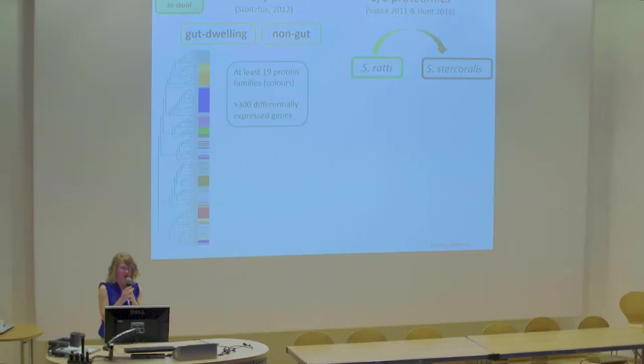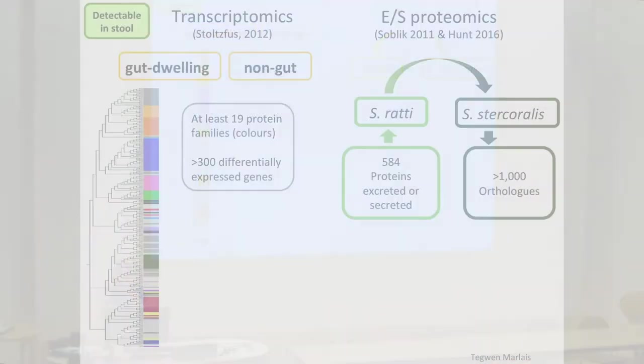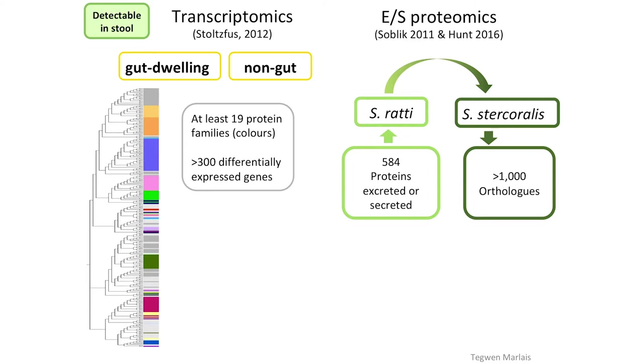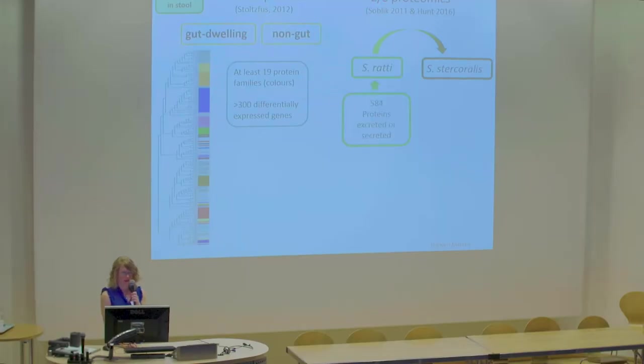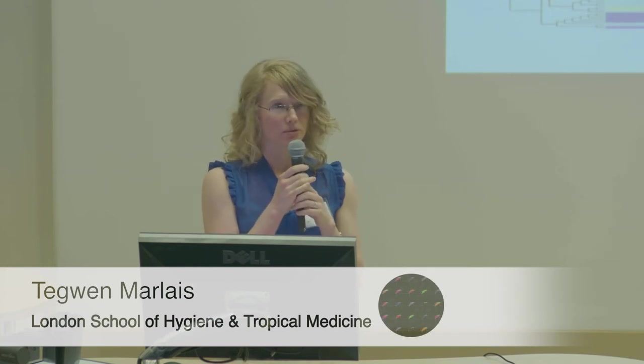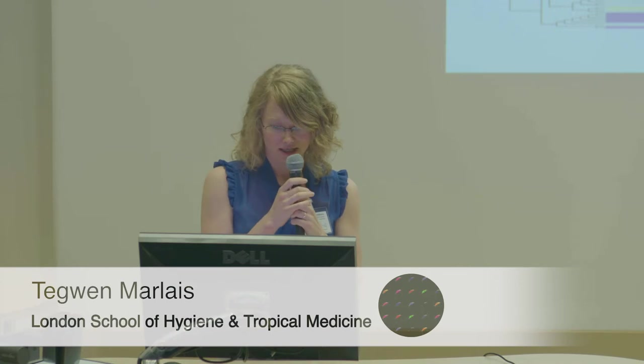The other dataset is a proteomics from excreted and secreted material, but it's from Strongyloides ratti, which is maintained in laboratory animals. The data was acquired in 2011 and then improved in 2016 when the genome became available. The ratti data consisted of nearly 600 proteins, but there's no equivalent dataset in stercoralis, so I wanted to convert that ratti data into stercoralis by searching those proteins against the stercoralis genome, which gave me over a thousand orthologues.